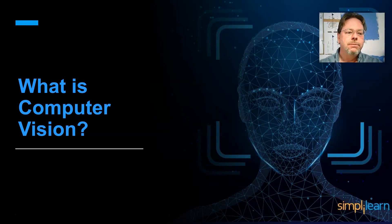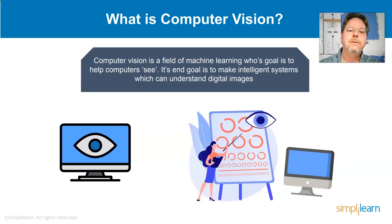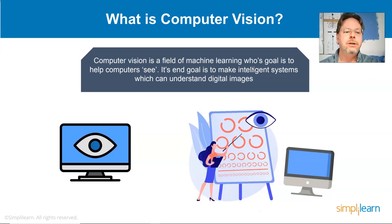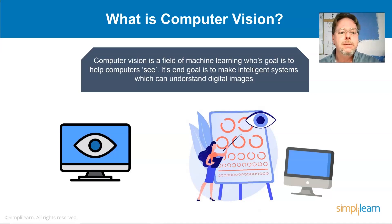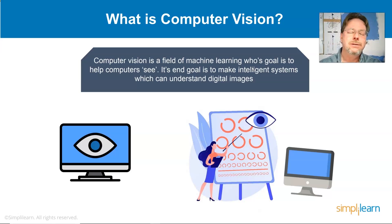When we talk about OpenCV, we're really talking about computer vision. Computer vision is a field of machine learning whose goal is to help computers see. Its end goal is to make intelligent systems which can understand digital images. There are all kinds of examples: handwriting identification, categorizing pictures — is that a dog or a cat? Those are all part of computer vision. Automated cars and being able to drive down the road also use aspects of computer vision.